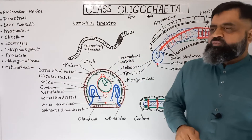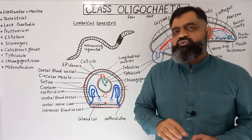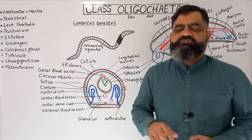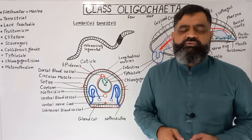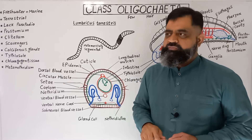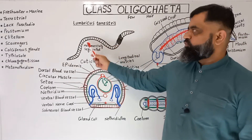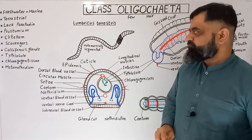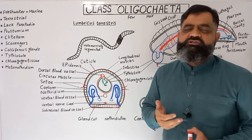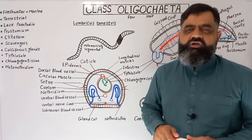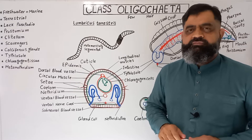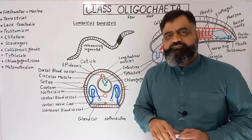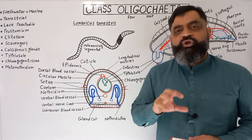First, what is their occurrence? They are usually found in freshwater, marine water, and most species are found in moist soil because they live in terrestrial conditions. Their body is elongated and worm-like with anterior, posterior, dorsal, and ventral sides. Their body usually lacks parapodia, which are very important appendages for locomotion in Phylum Annelida.